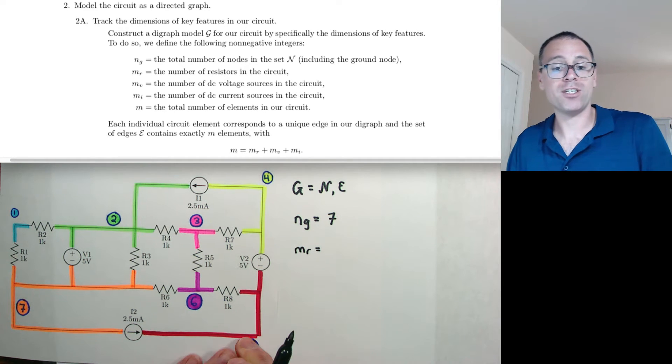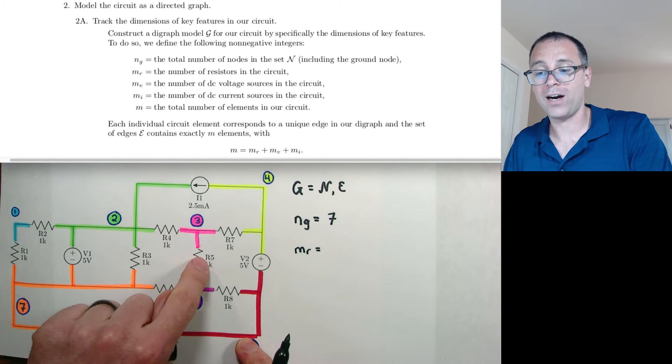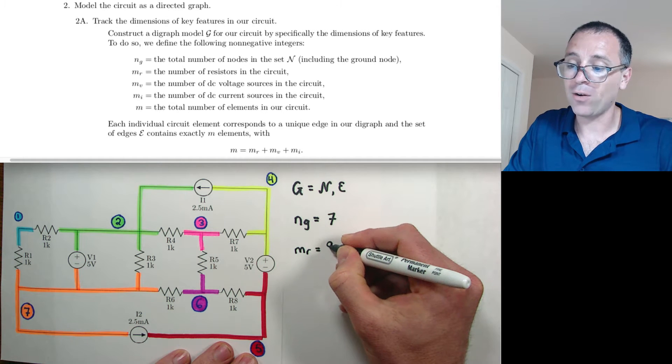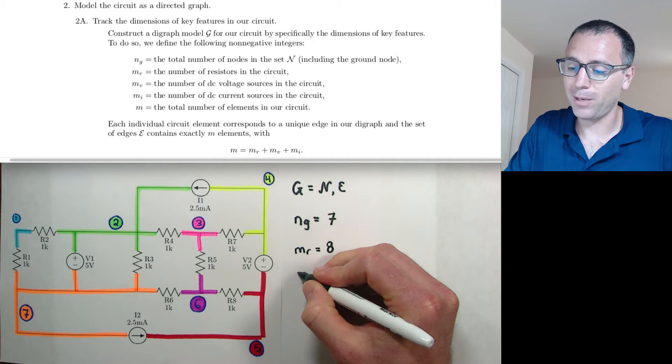Next thing we're going to do is look at M sub R. M sub R is going to be the number of resistors. We see in our circuit diagram there are one, two, three, four, five, six, seven, eight resistors. Check that out. Twenty-five years of schooling, and I still remember to count to eight. That's amazing.